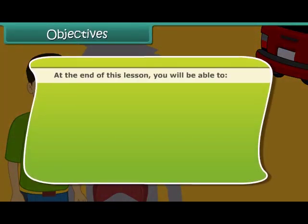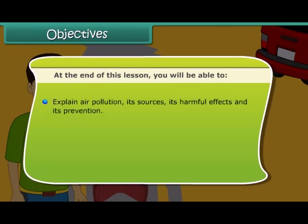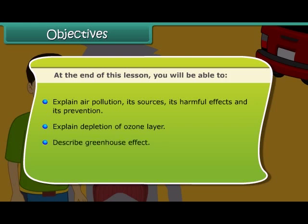At the end of this lesson, you will be able to explain air pollution, its sources, its harmful effects, and its prevention. You will also explain depletion of the ozone layer, describe the greenhouse effect, and explain the formation of acid rain.